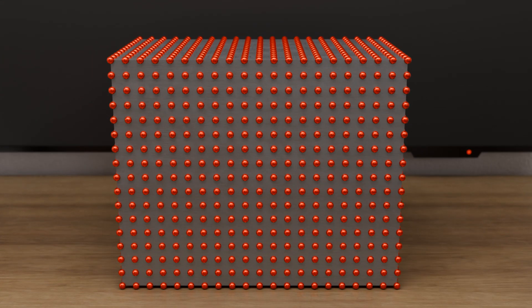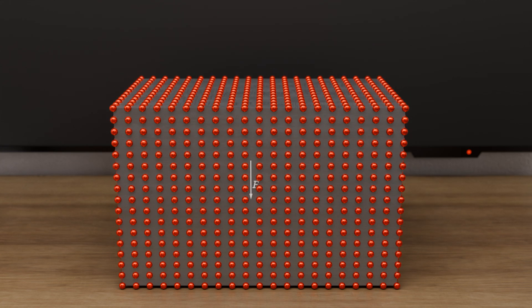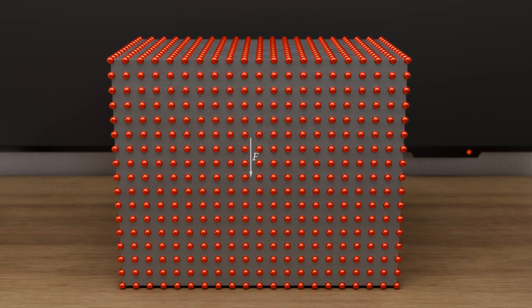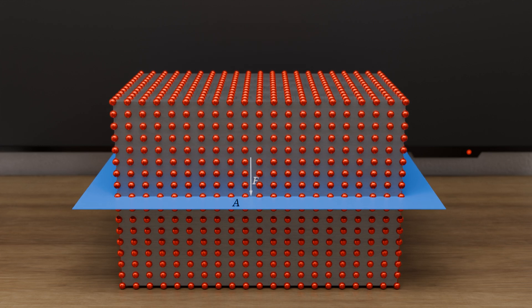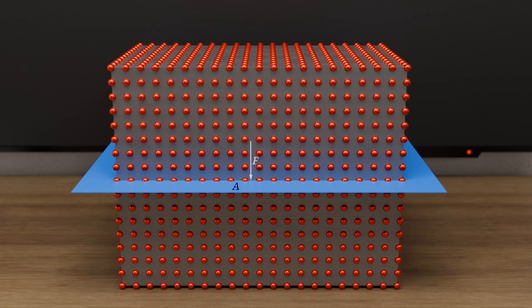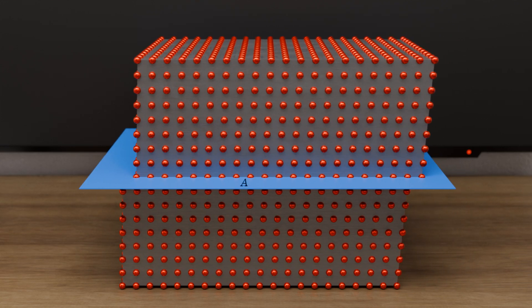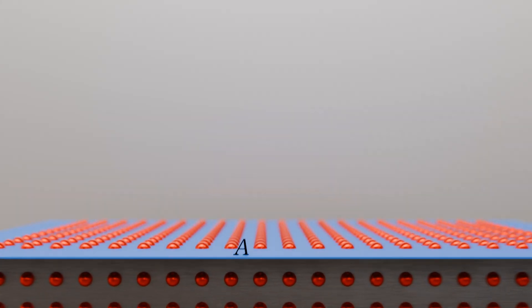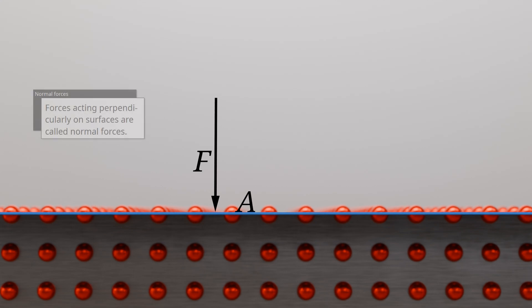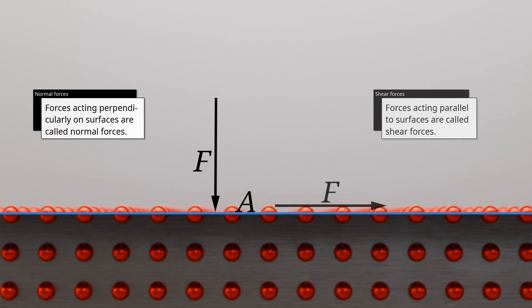All deformation processes in metals are therefore based on the sliding of atomic layers. However, this is only possible if a force is applied in the right way. A compression of the atomic structure would only lead to a compression of the lattice structure, but not to a sliding of the atomic layer on the slip plane. Slipping only occurs when the force acts in such a way as to cause a lateral displacement of the atomic structure. Forces that act perpendicularly on surfaces are called normal forces, which can be divided into tensile forces and compressive forces. Forces acting parallel to a surface are called shear forces.